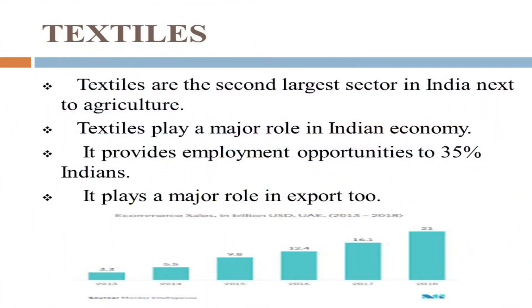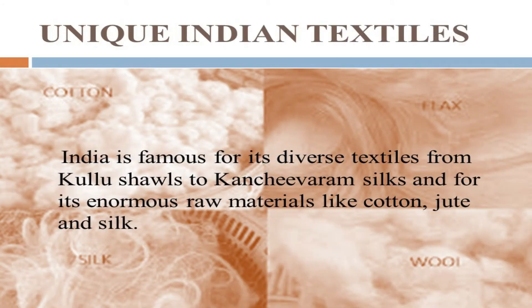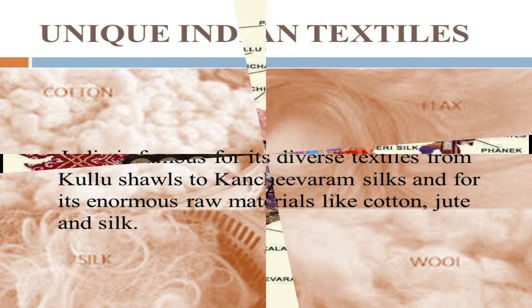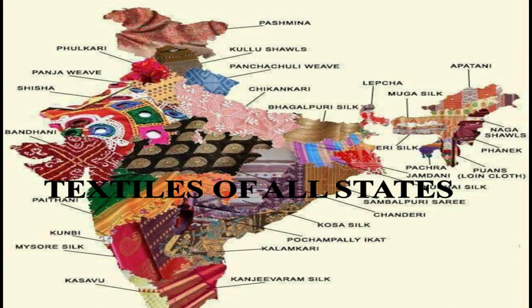We have chosen the textile sector. Textiles are the second largest sector in India next to agriculture. Textiles play a major role in the Indian economy — they provide employment opportunities to 35% of Indians and play a major role in exports too. India is famous for its diverse textiles, from Kullu shawls to Kanchiburam silks, and for its enormous raw materials like cotton, jute, and silk. These are the unique textiles of our country.